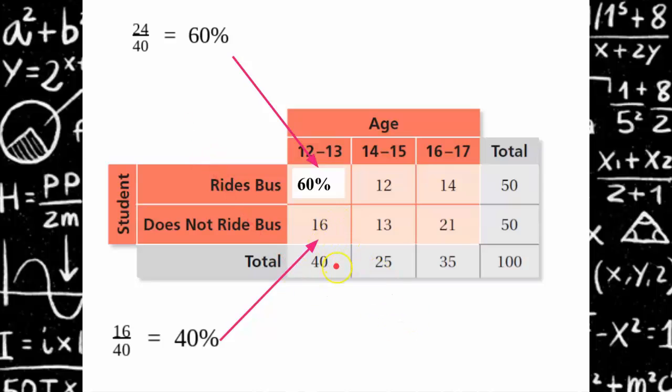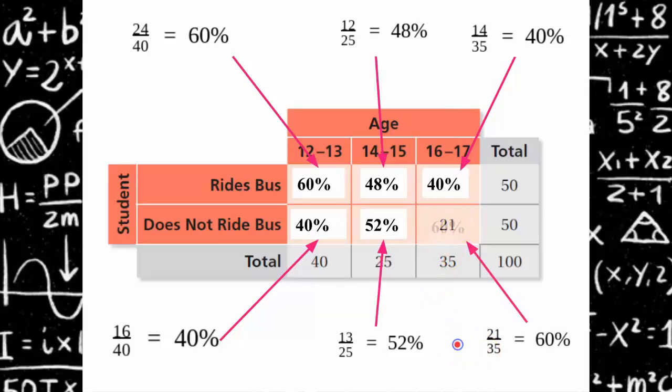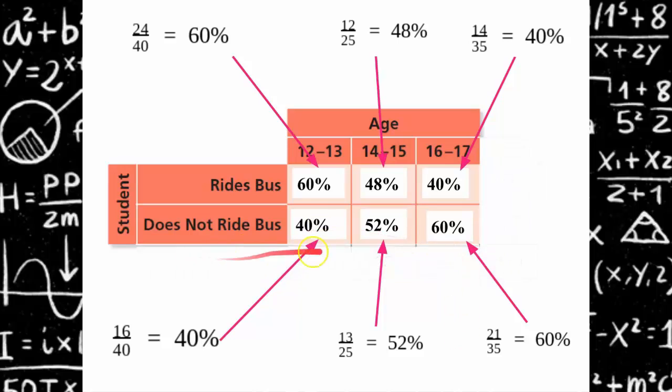Right here I have 16 students out of the 40 twelve to thirteen year olds that did not ride the bus so this cell becomes 40 percent. Now we move on to our 14 to 15 year olds and 12 out of the 25 fourteen to fifteen year olds rode the bus so that's 48 percent. Continuing on to our 16 to 17 year olds, 14 out of the 35 students that are 16 to 17 years old rode the bus so that's 40 percent, and then did not ride the bus is 21 out of 35. Then you typically take out your marginal frequencies. So here's our relative frequency table.